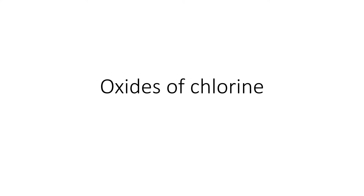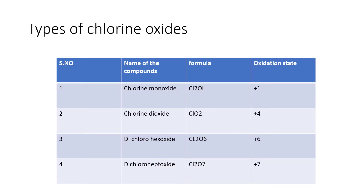You can see that in the table. First one is Chlorine Monoxide, Cl2O, with plus 1 Oxidation State. Chlorine Dioxide has plus 4 Oxidation State. Dichloro Hexo Oxide, Cl2O6, Chlorine Oxidation Number plus 6. Dichloro Hepto Oxide, Cl2O7, Oxidation Number is plus 7.